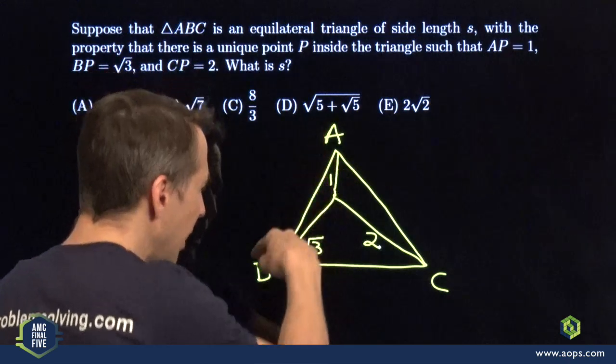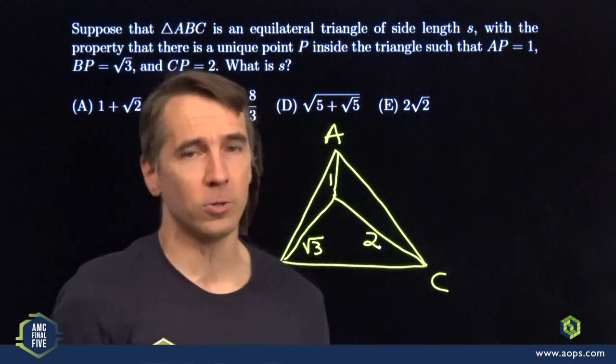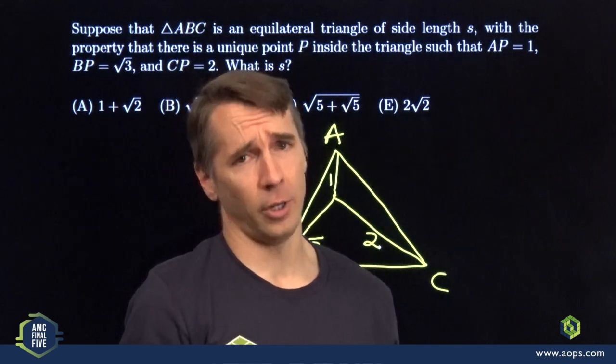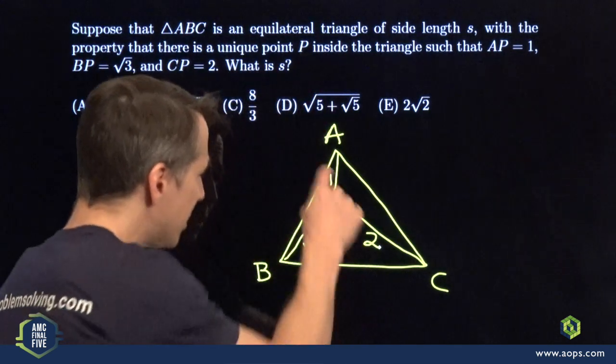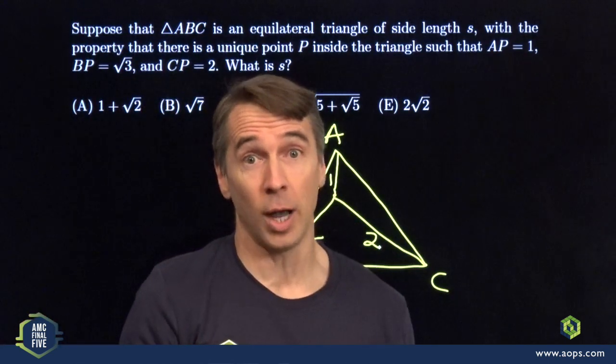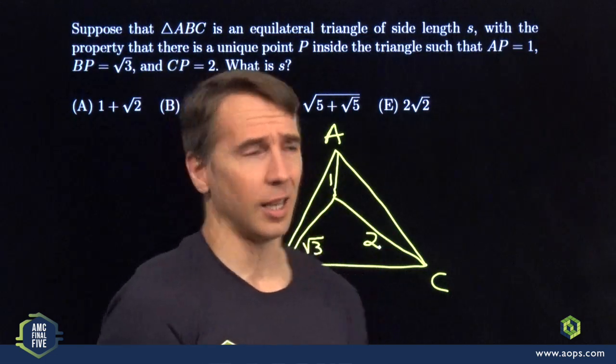Now it's awfully tempting to label each of the sides S, label the angles in here, break out the law of cosines. But I got to tell you, life's too short for the law of cosines. I see the one, I see the root three, I see the two, I start thinking 30, 60, 90 triangles. So we got to find a 30, 60, 90 triangle with these lengths.